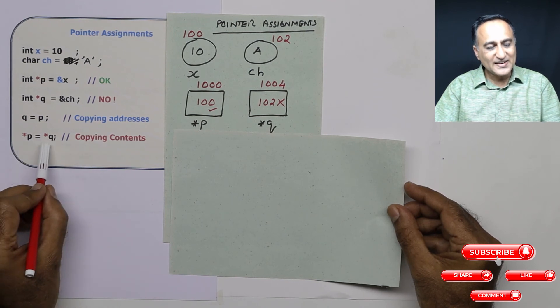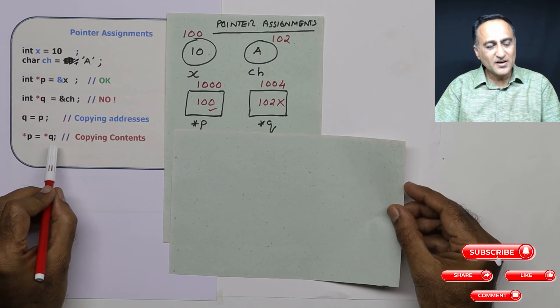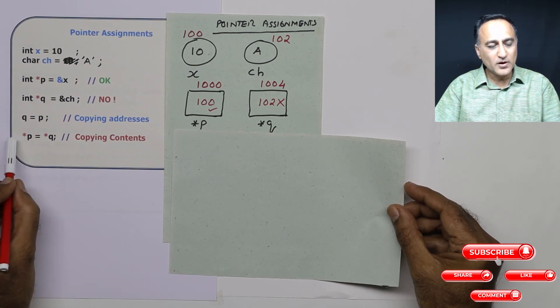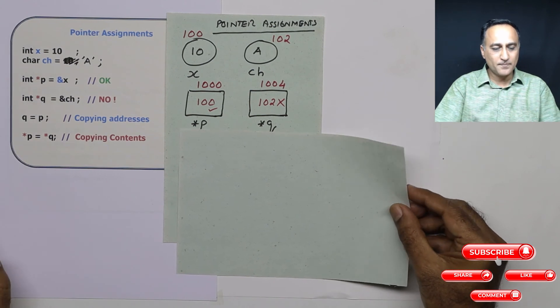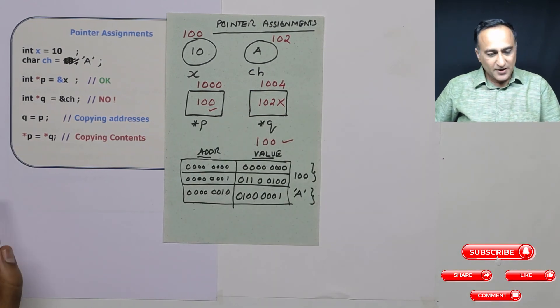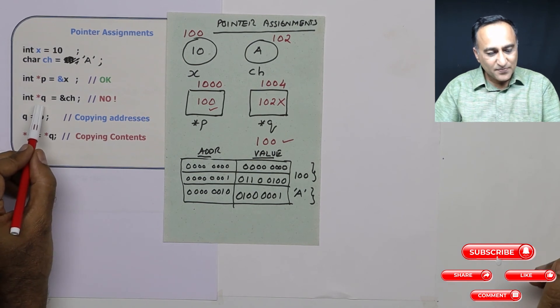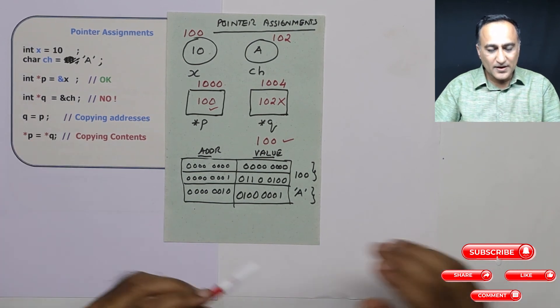Similarly I can copy the content. If p is referring to 10 and q is referring to 20, the content 20 referred by q can be copied to p. Absolutely not a problem.